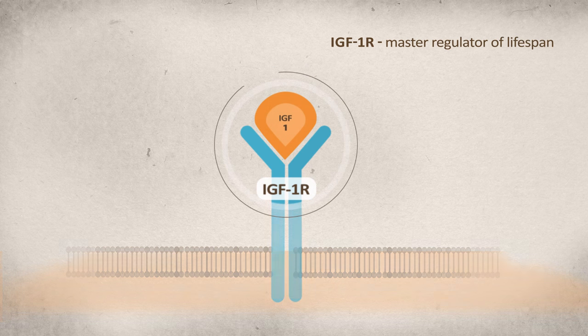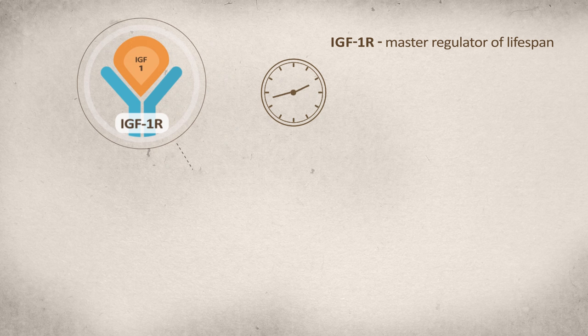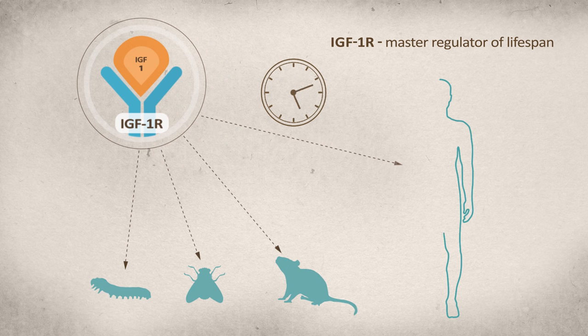Reduction in the receptor level delays aging in diverse species, including worms, flies, mice, and most importantly, humans.